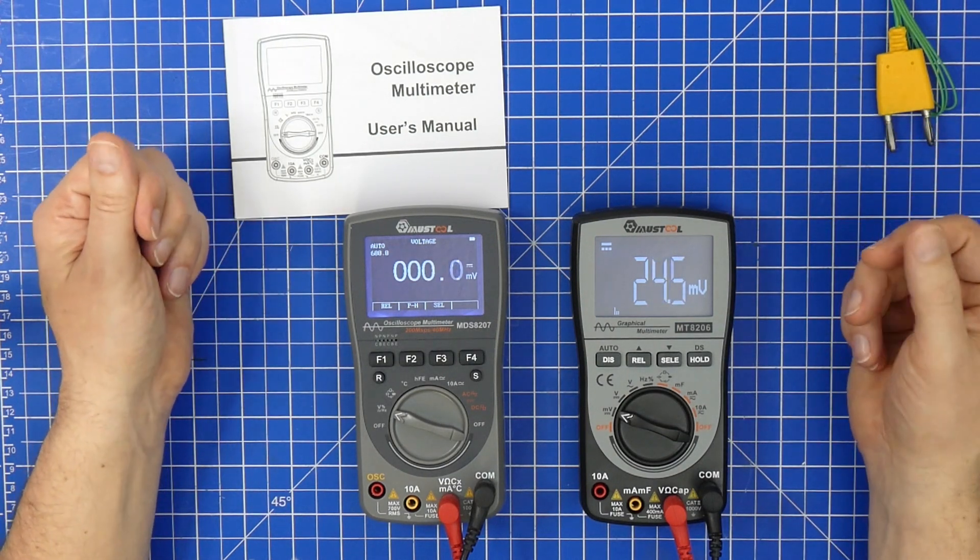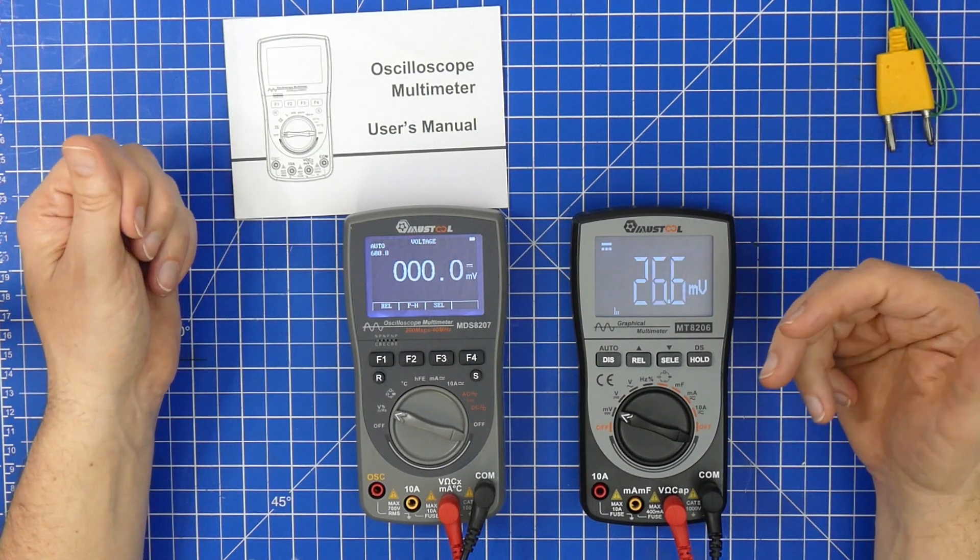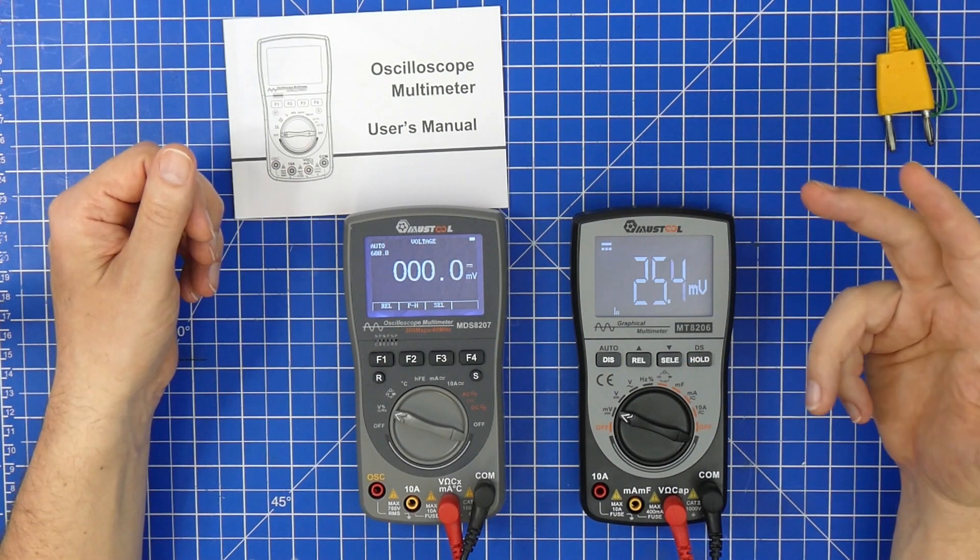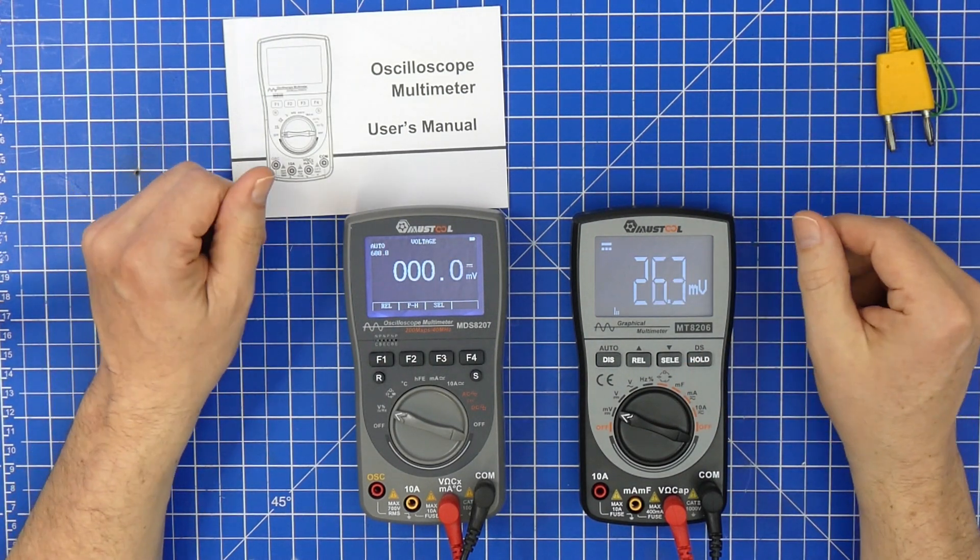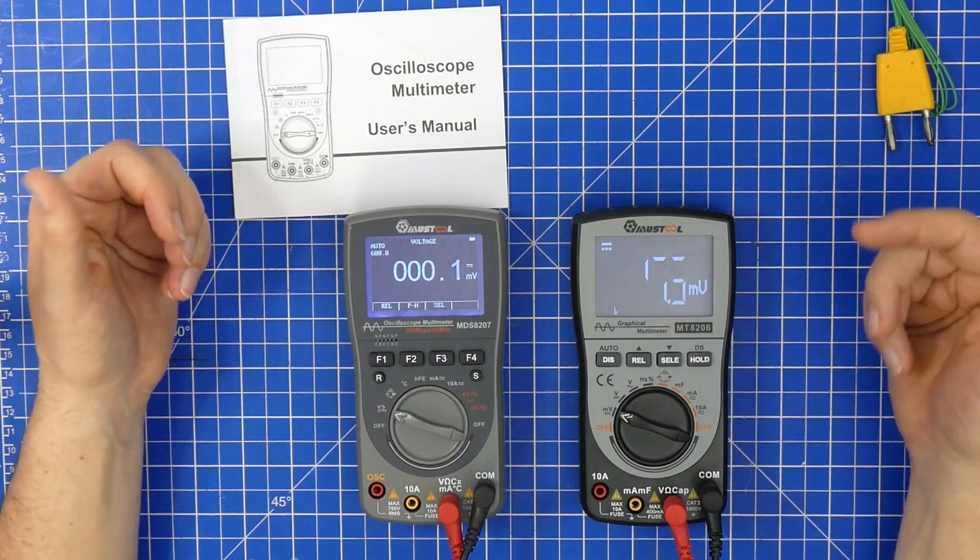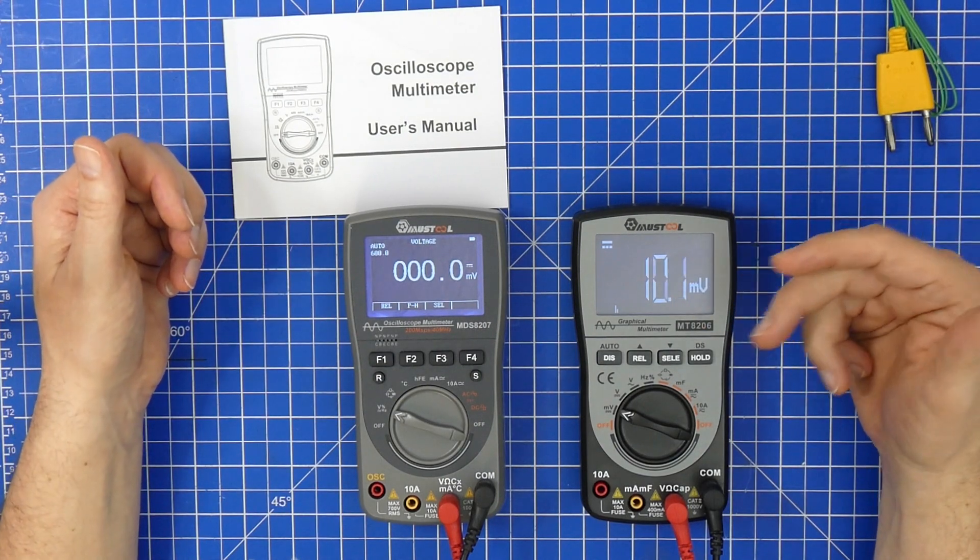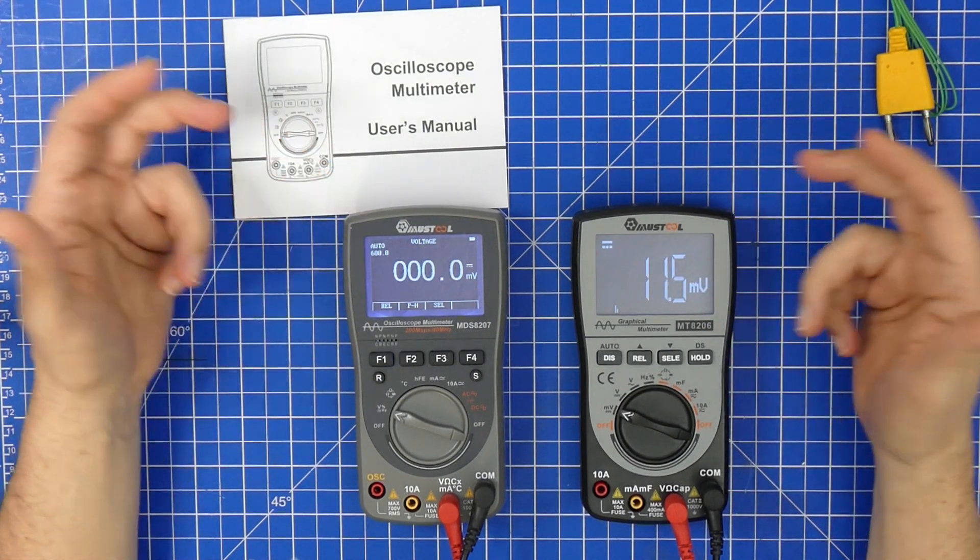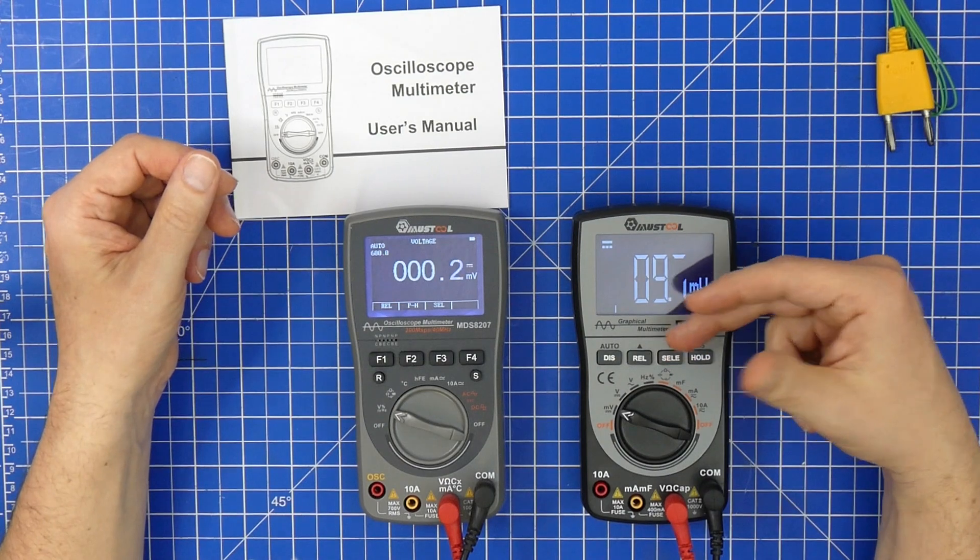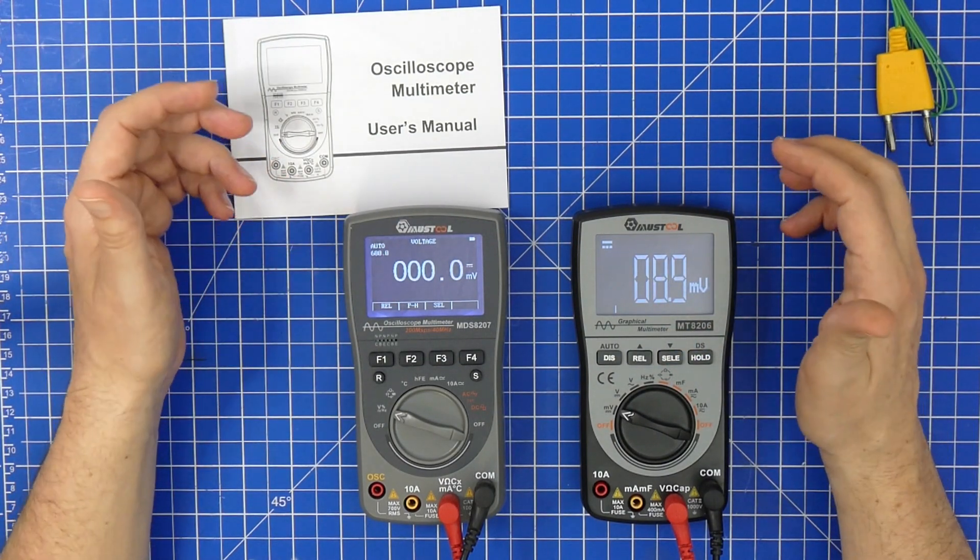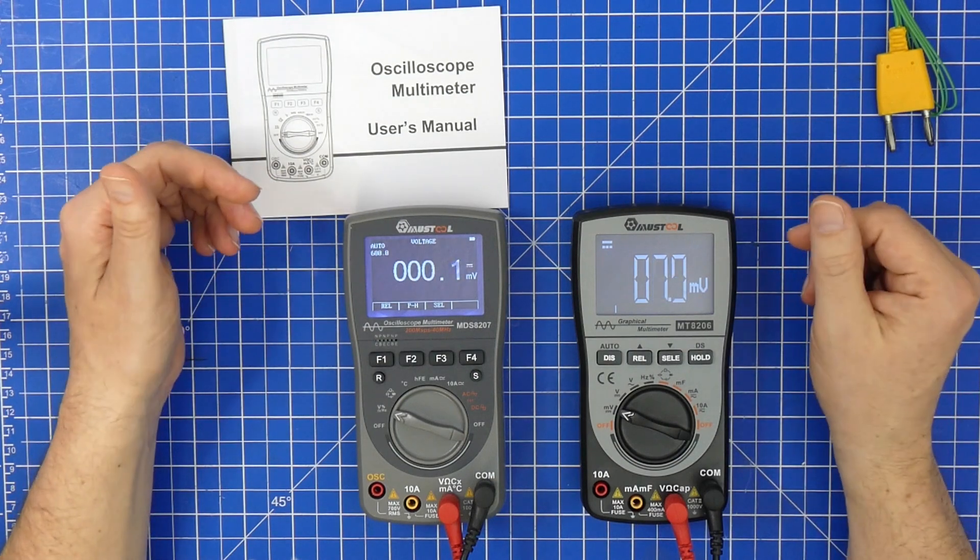On the other hand if you need something really simple where you just want to have your standard measuring and you want to be able to go into a second mode and have a graphical display of what you're seeing in the or of what you're not seeing in the analog display, then hey this is also a pretty good device. So I really like the new 8207.